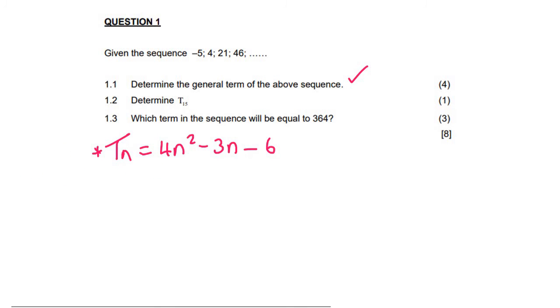Now for question 1.2, they're saying determine the value of term 15, so that's a nice easy one. Term 15 is equal to 4 times 15 squared minus 3 times 15 minus 6 on the calculator, and that's going to be 849.